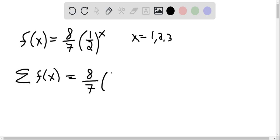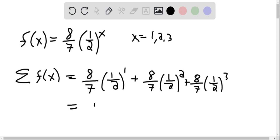So it's 8 7ths times 1 half to the first plus 8 7ths times 1 half squared plus 8 7ths times 1 half to the third, which is 4 7ths plus 2 7ths plus 1 7th, which is 1. And so we have verified that this is a probability mass function.